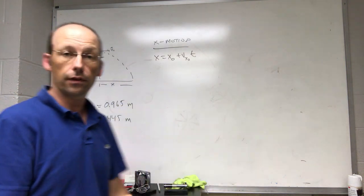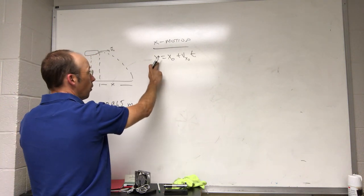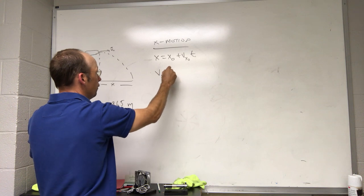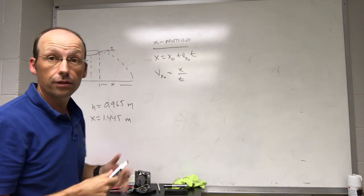So, if I can find the x velocity, that's the initial velocity. So, I know it started at x equals 0 and it ended at x. So, I could solve for v x 0 equals x over t. Okay. But I don't know t.